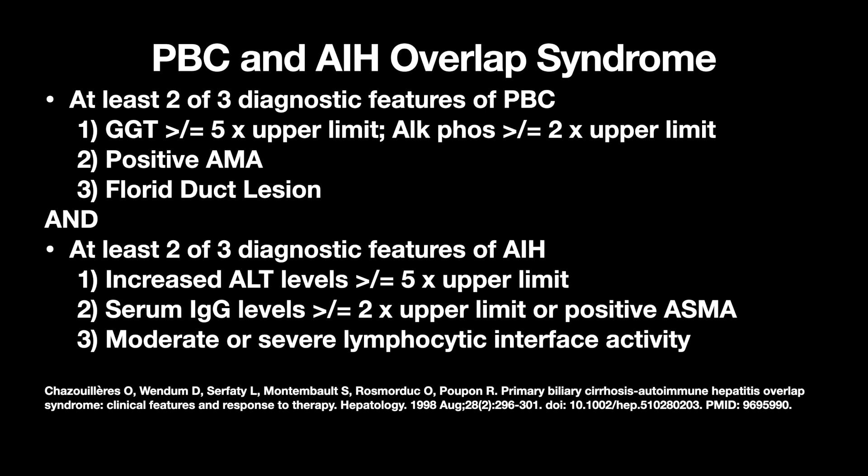Lastly, PBC-AIH overlap syndrome. You need at least two of three diagnostic features of PBC: GGT greater than or equal to five times the upper limit or ALK-phos greater than or equal to two times the upper limit, positive AMA, and a florid duct lesion. And two of three features of AIH: elevated ALT greater than or equal to five times the upper limit, serum IgG greater than or equal to two times the upper limit or positive anti-smooth muscle antibody, and moderate or severe lymphocytic interface activity. The reference for this is shown below.